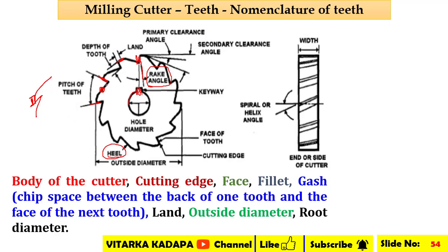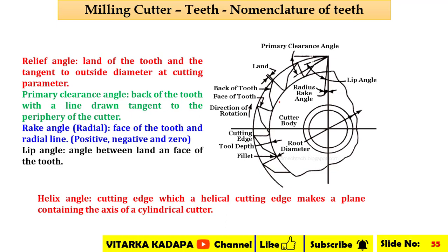Next, we look at the relief angle, which occurs at the land of the tooth and the tangent drawn outside the cutting perimeter. The primary clearance angle is the angle at the back of the tooth — a line drawn to the tangent of the periphery of the cutter gives this angle. The rake angle is defined with respect to the face of the tooth and a radial line, typically 90 degrees — an orthogonal line.